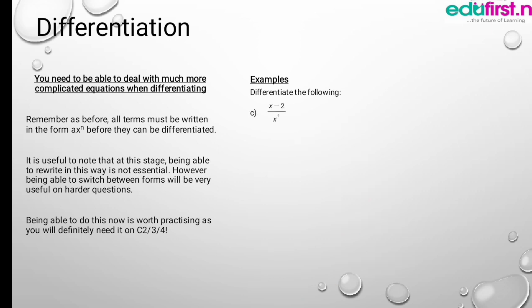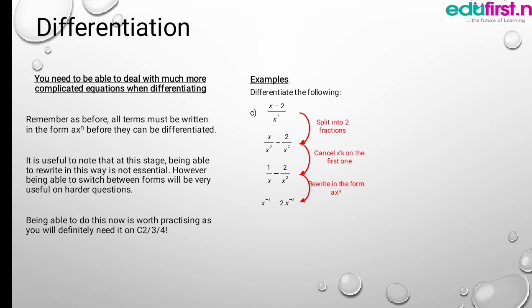Another example: differentiate (x minus 2) all over x squared. Split into two fractions: x over x squared minus 2 over x squared. Cancel x on the first fraction to get 1 over x minus 2 over x squared. Rewriting: x to the power minus 1 minus 2x to the power minus 2. Now differentiate: dy/dx equals minus x to the power minus 2 plus 4x to the power minus 3.